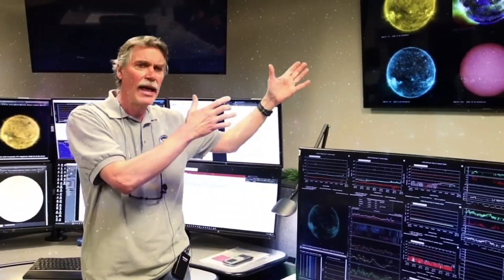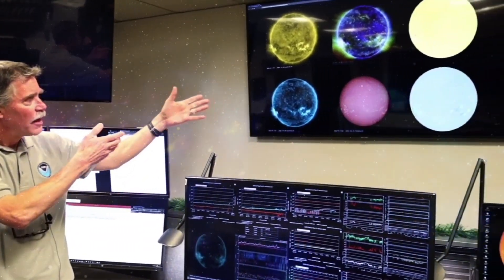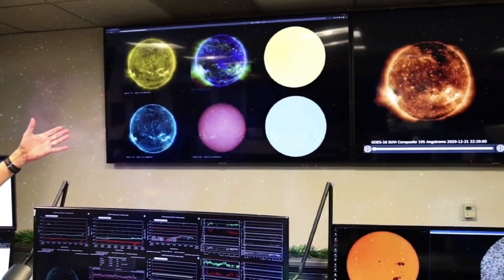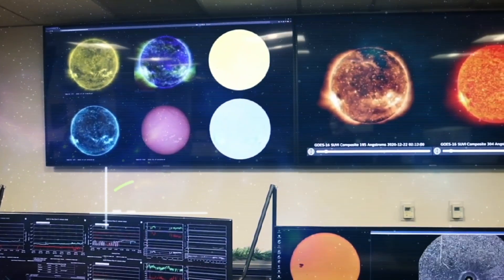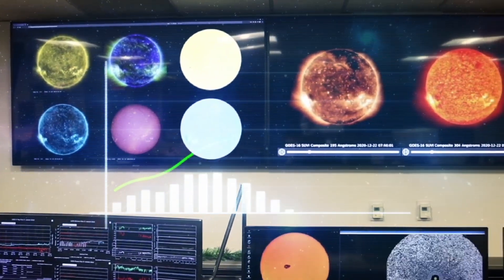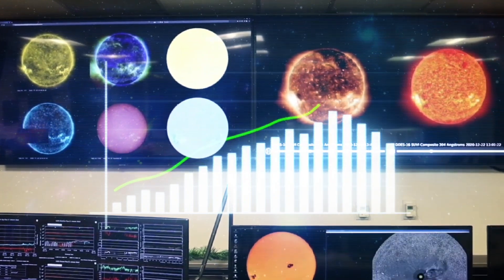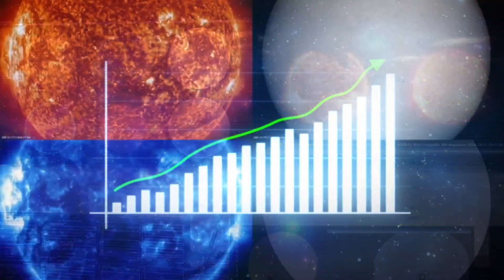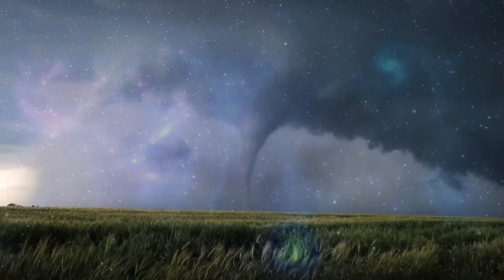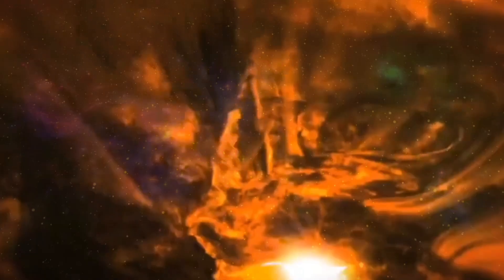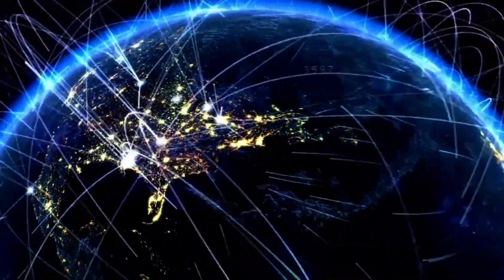If a really big solar storm hits us in 2024, we could see some disruptions. Maybe your GPS goes haywire or there's a temporary blackout. But don't worry, scientists are on it, keeping an eye out and planning ways to keep our tech safe.